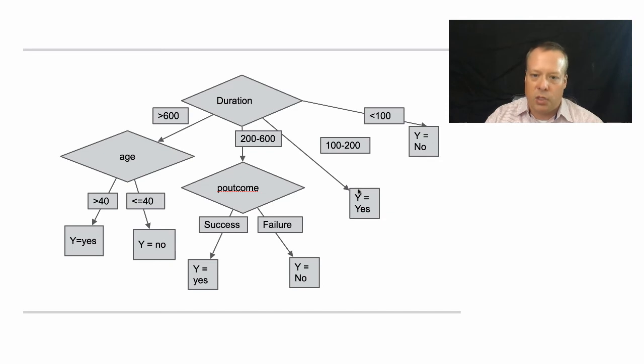If it's between 100 and 200, then it's yes. If it's between 200 and 600, then you look at the previous outcome. If that was a success, then you're going to predict success. Otherwise, you're going to predict a failure of no.